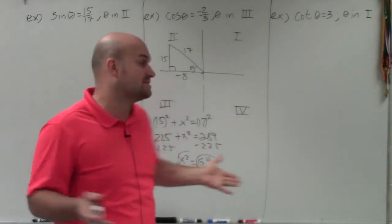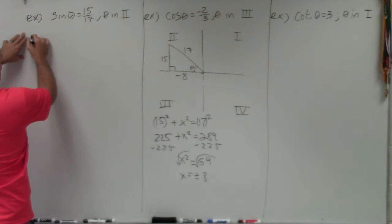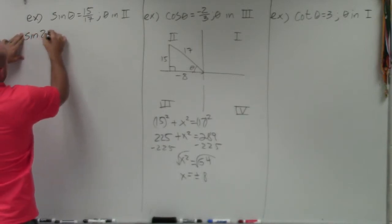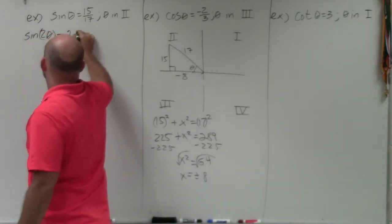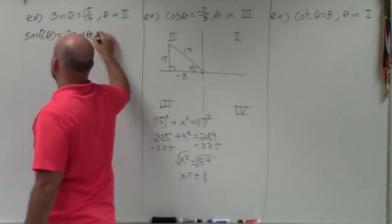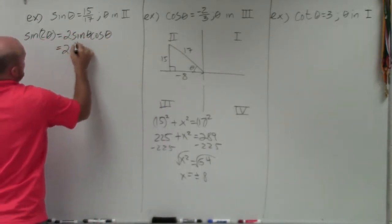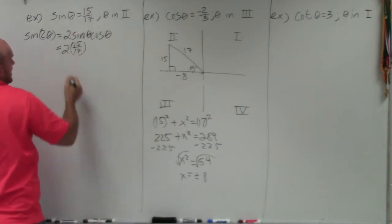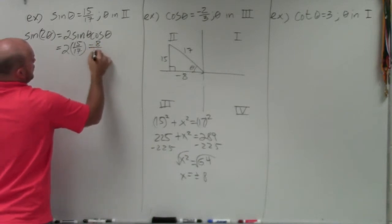So the first one I'm going to do is going to be the sine of 2 theta. So the sine of 2 theta is going to be 2 sine of theta cosine of theta. So that's going to be 2 times 15 over 17, which they tell us in the problem, and then cosine is going to be negative 8 over 17.